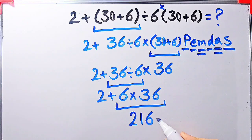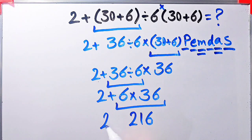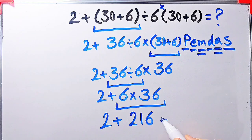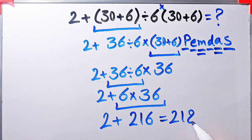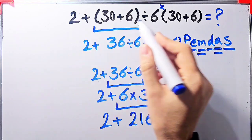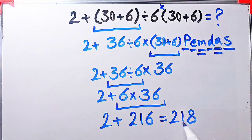Now the question is 2 plus 216. 2 plus 216 equals 218. The final answer of this question equals 218.